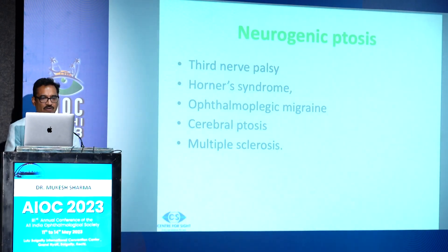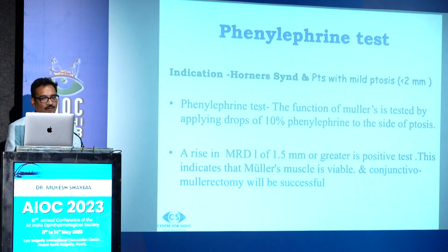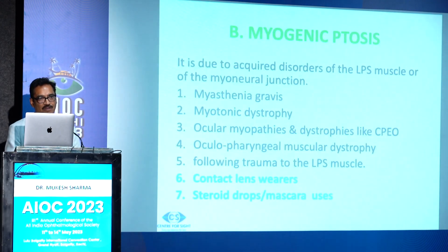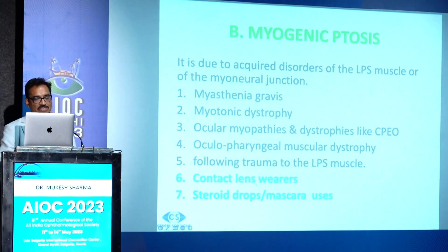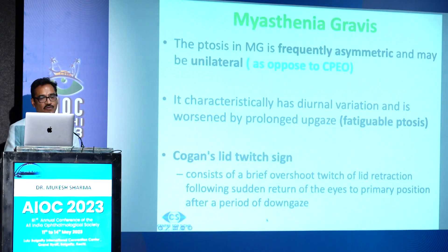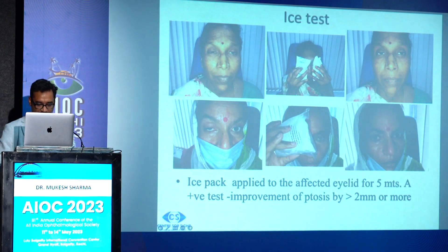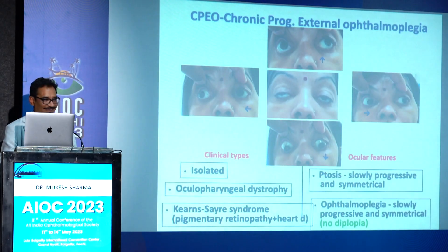Other myogenic causes include myasthenia gravis, dystrophies like CPEO, contact lens wear, use of steroid eye drops, and mascara — it is very important to take a history of mascara use. For myasthenia, a sleep test and ice test are needed. Decision making for ptosis surgery: congenital ptosis — ideal age is 4 to 5 years; do early surgery if there are chances of amblyopia. Always refract the patient under cycloplegia because many patients have anisometropic amblyopia along with ptosis. Surgical aim in congenital ptosis: mild under-correction if there is good levator action; slight over-correction if there is poor levator action.